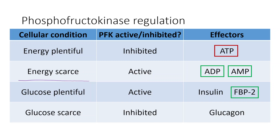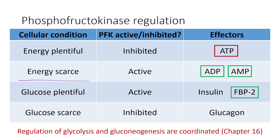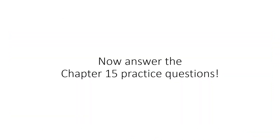Glycolysis and gluconeogenesis have to be coordinated through insulin and glucagon signaling, which we'll discuss more in Chapter 16. The reason is that they form a cycle: glycolysis breaks glucose down to pyruvate, gluconeogenesis builds pyruvate back up to glucose. If both were simultaneously active, you'd have a futile cycle — breaking a molecule down just to rebuild it — wasting energy. So when one process is active, the other must be inactive. With that, you should be ready to start answering the Chapter 15 practice problems.